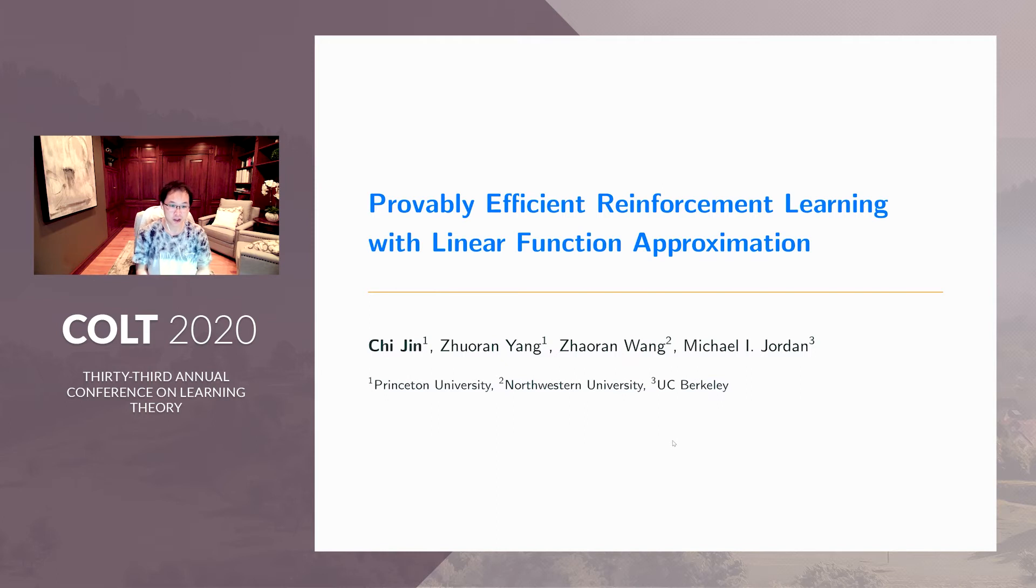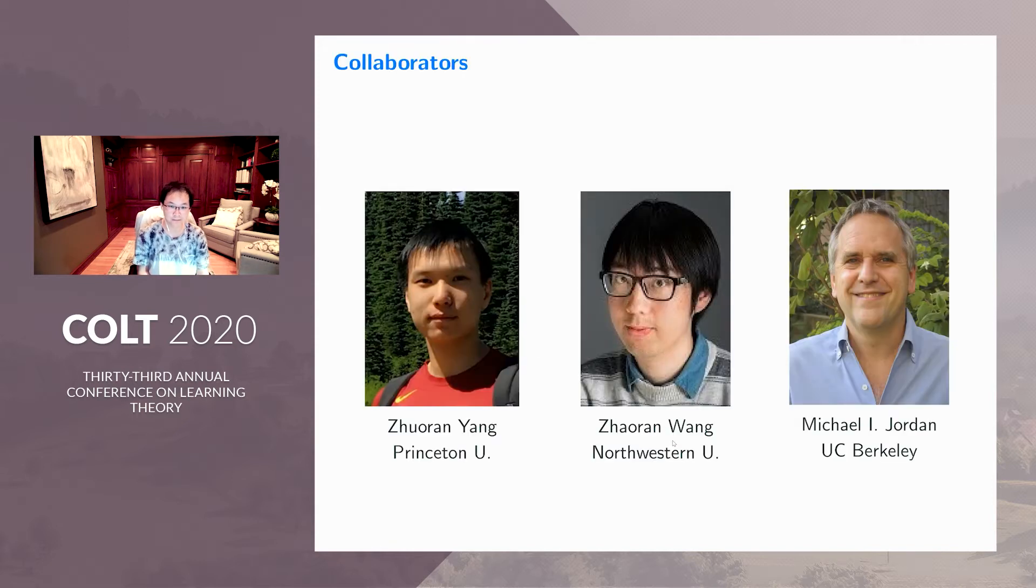Hello, everyone. This is Qi Jing. Today I'm going to talk about our COLT paper on provably efficient reinforcement learning with linear function approximation. This is a joint work with Zhuoran Yang, Zhaoran Wang, and Michael Jordan. These are the pictures of my wonderful collaborators, and Zhuoran Yang will also be on the job market next year.